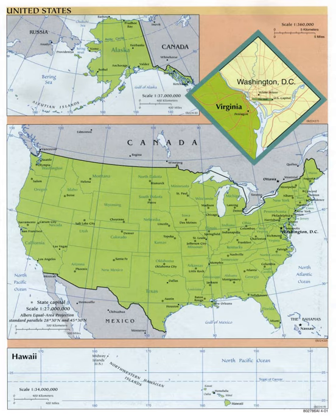The fifty states of the United States of America include both a Postal Code abbreviation and a traditional abbreviation for each state. The continental United States typically refers to the main block of 48 states and their offshore islands, with the Atlantic Ocean to the east, Pacific Ocean to the west, Canada to the north, and Mexico to the south. Since this grouping contains 48 states, it is also commonly referred to as the lower 48. The designation contiguous United States is also used, arguably more accurately, since Alaska is also located on the North American continent. Alaska is an exclave of the United States, physically connected only to Canada.